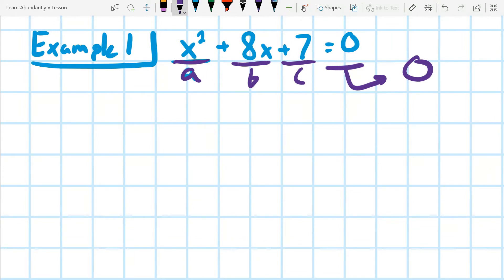So we can go ahead and factor our trinomial here. Since it has a one as a coefficient for the a term, we're looking for two things that add to our middle term and two things that multiply to our last term, our c.